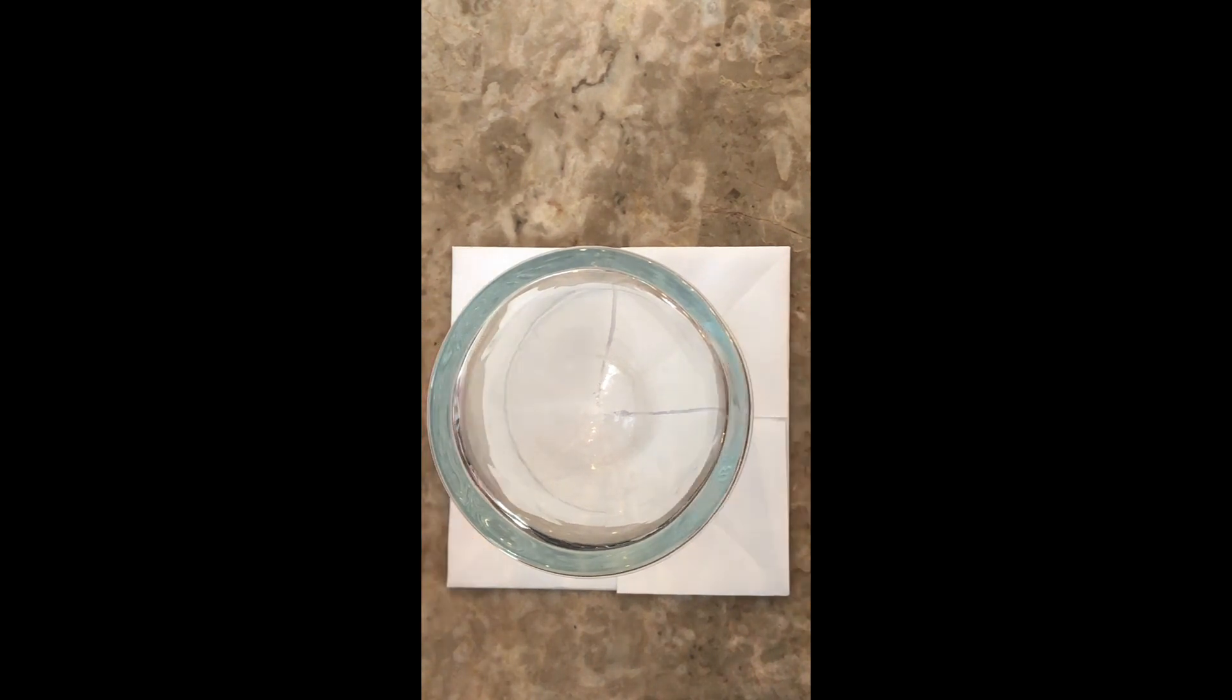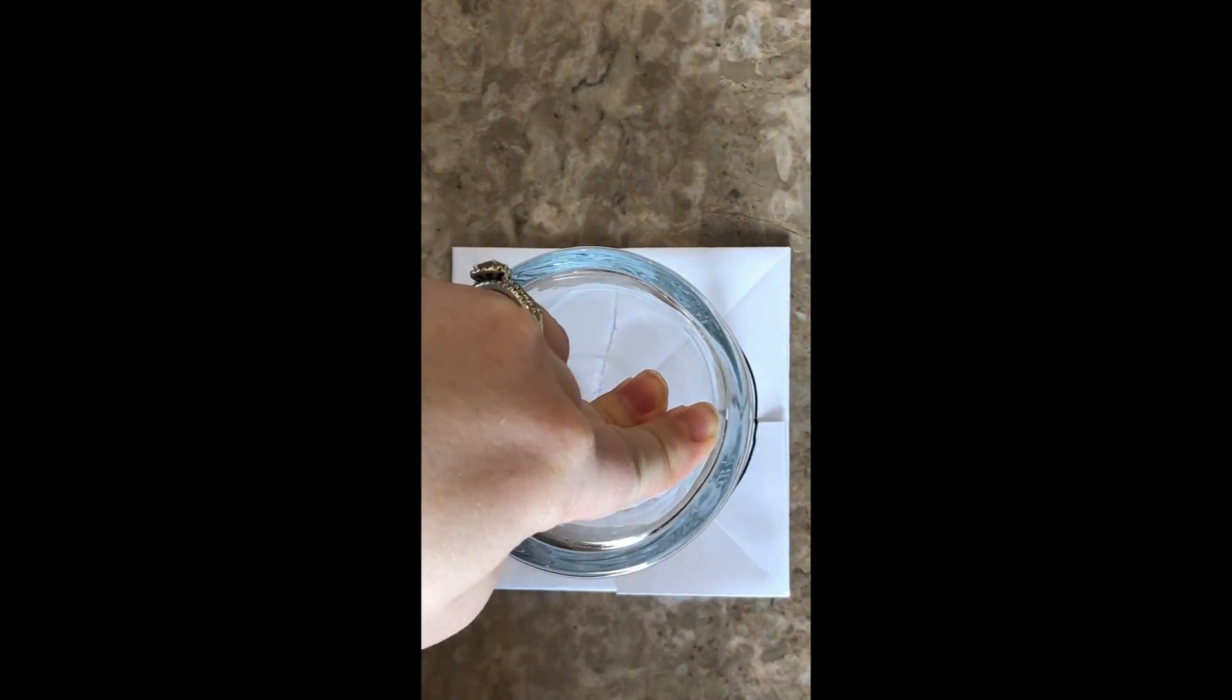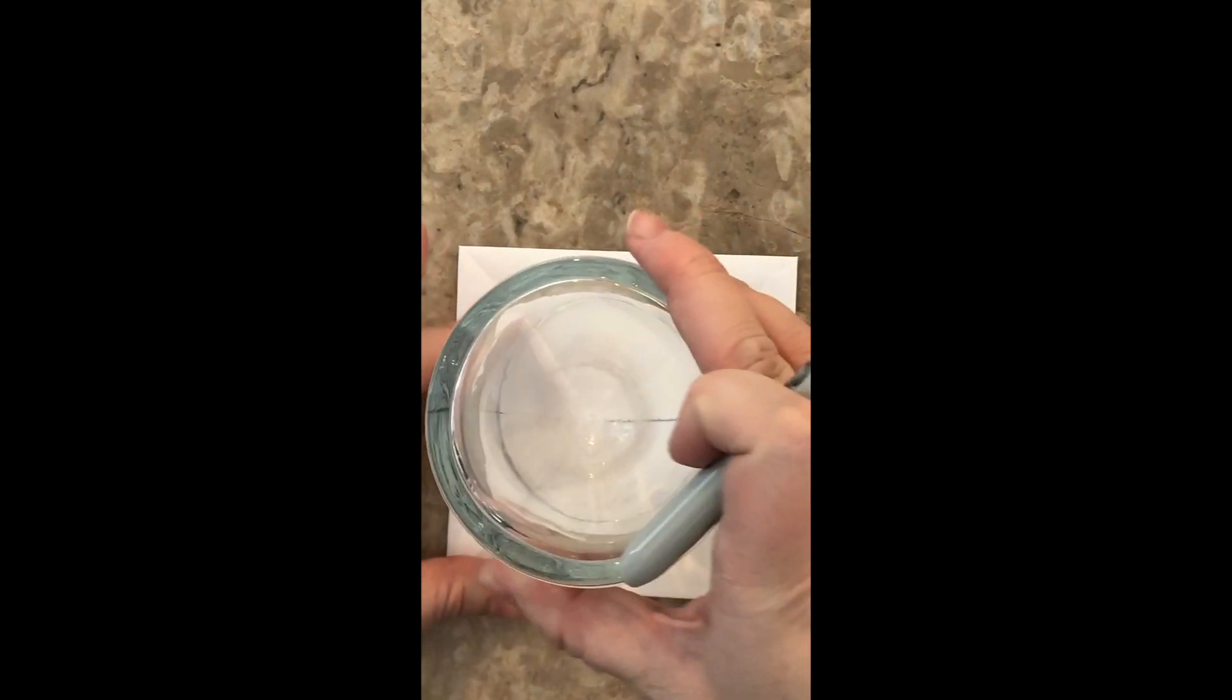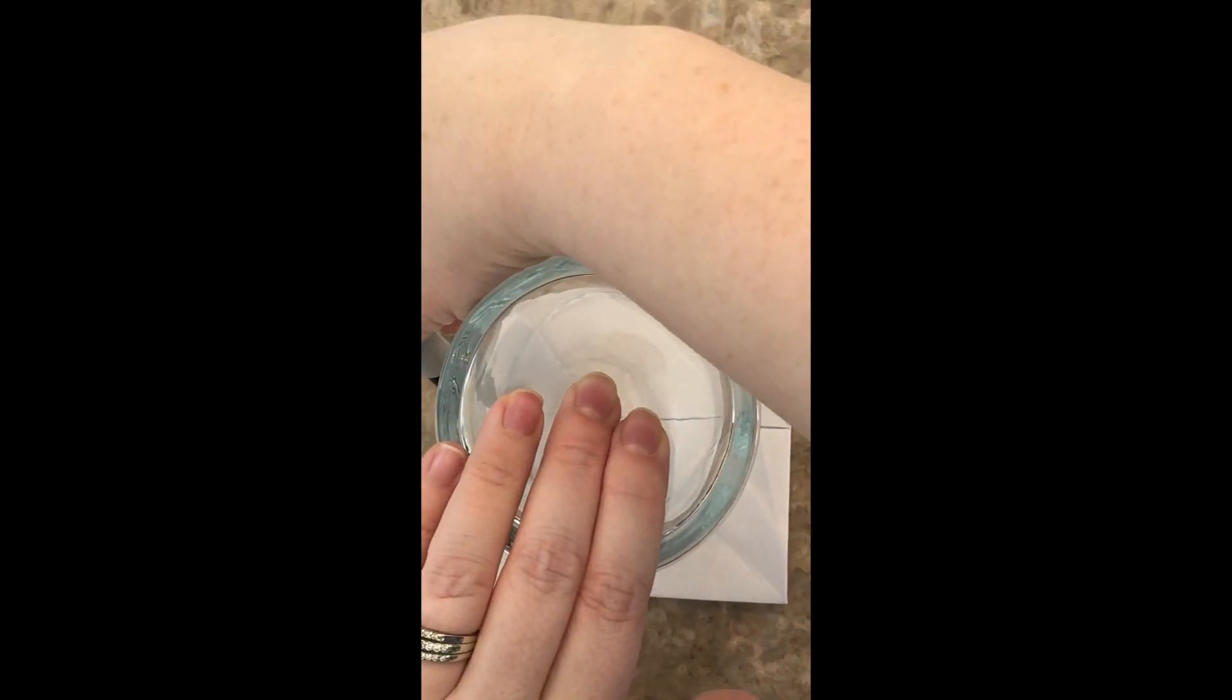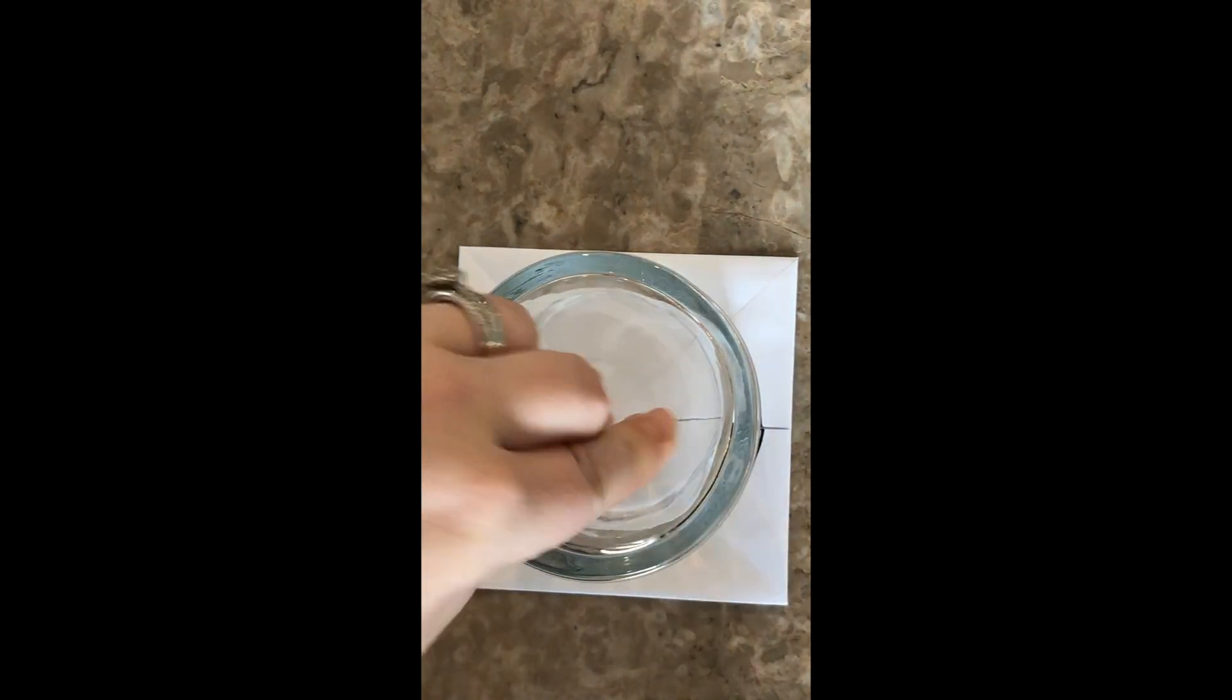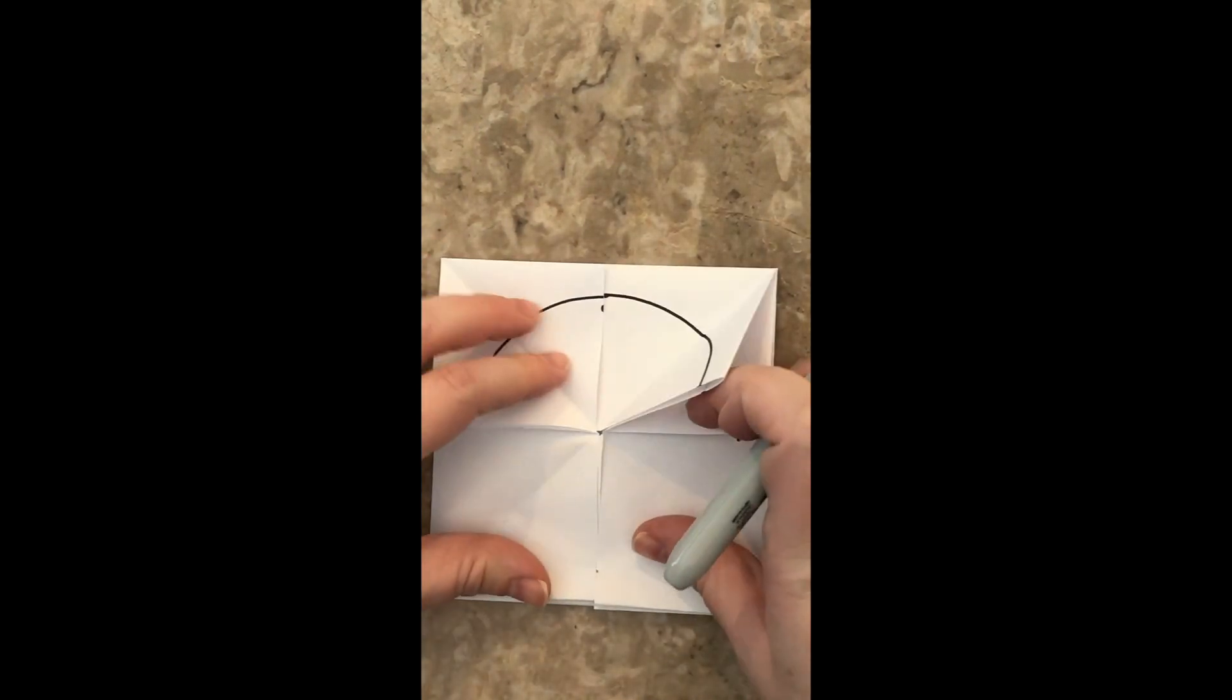Next step, you need to find something circular in your house. I'm using a cup from the cupboard and all I'm going to do is just center it and then draw a circle like so. Then you need to move a couple flaps, put your cup back on, trace around your second circle. Take it off.